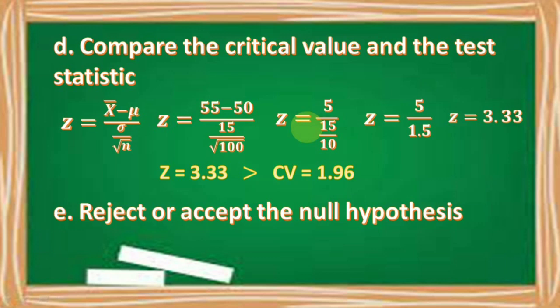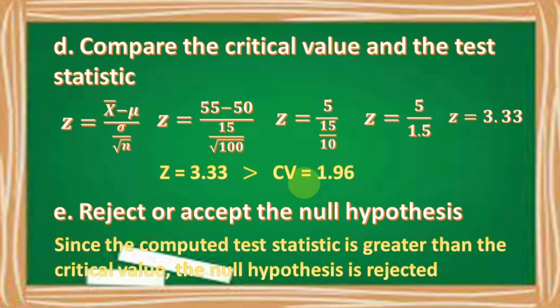E: Reject or accept the null hypothesis. Since the computed test statistic of 3.33 is greater than the critical value of 1.96, the null hypothesis is rejected.